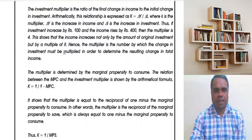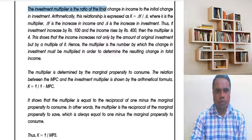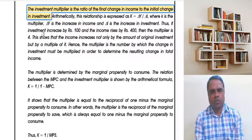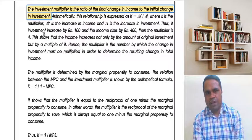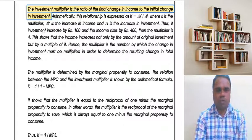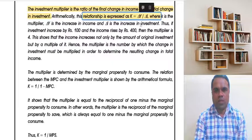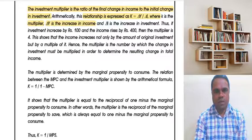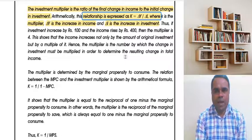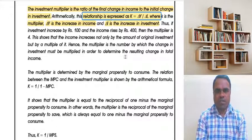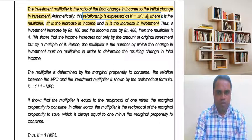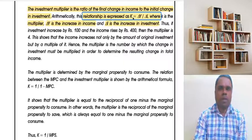The investment multiplier is the ratio of the final change in income due to the initial change in investment. The formula is: K = ΔY / ΔI, where K is the multiplier, ΔY is the increase in income, and ΔI is the increase in investment. In other words, the multiplier is the ratio of change in income due to change in investment.